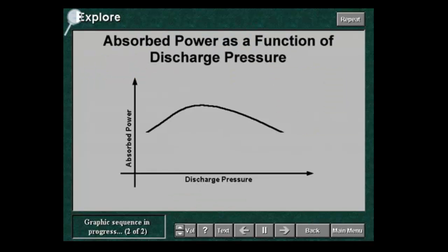The change of absorbed power with the discharge pressure is shown on this graphic. Assume an initially low compression ratio. If the discharge pressure is gradually increased, at first the absorbed power of the compressor increases due to the increase in compression ratio. As the delivery pressure continues to rise, however, the reduction in flow rate affects the power more than the compression ratio. The absorbed power reaches a maximum value and then decreases.